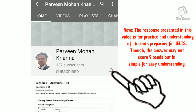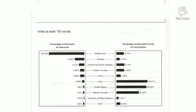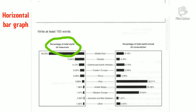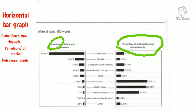Let us first understand the illustration. It is a horizontal bar graph having two presentations. On your left is the percentage of total world oil resources — we can say global petroleum deposits, petroleum stocks, or petroleum assets — shown as a percentage.